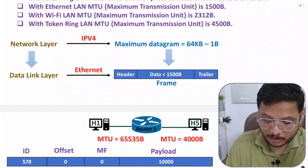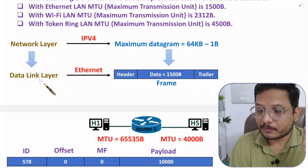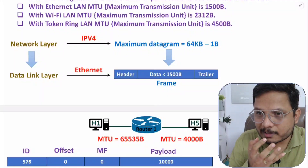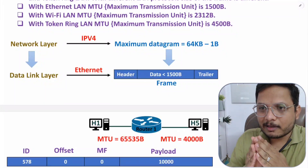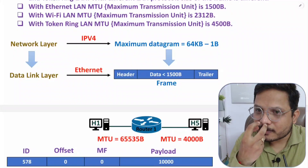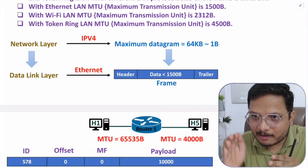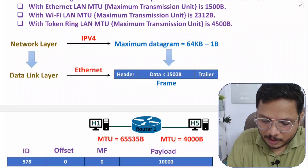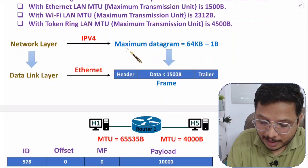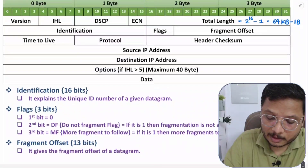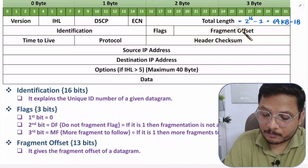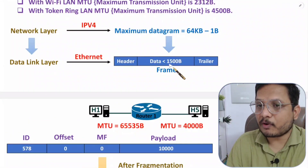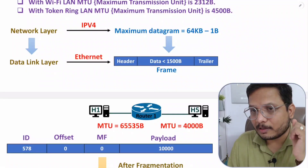We need to take the IPv4 frame and bisect it to fit into the data link layer frame format. It's like being given a whole cake — you can't eat the entire cake at once, so you fragment it: cut a piece, eat it, enjoy the taste, then cut the next piece. That's fragmentation with cake, and that's the same thing we do here. The network layer packet can be up to 64 KB minus 1, but we don't have that much size available in the data link layer frame.